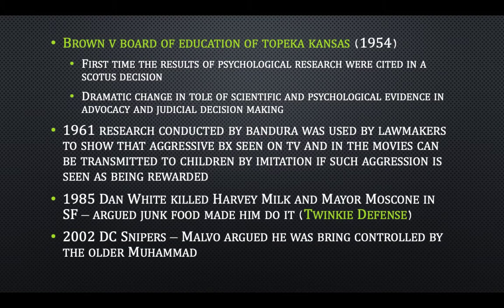In Brown versus the Board of Education of Topeka, Kansas, in 1954, this is the first time that we're using psychological research in a SCOTUS — Supreme Court of the United States — decision. Brown versus the Board of Education of Topeka, Kansas is where separate but equal education was struck down. And so this signals a dramatic change in the role of scientific and psychological evidence, both in advocacy and the decision-making performed by judges.